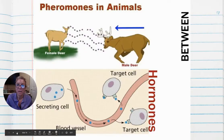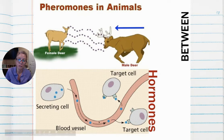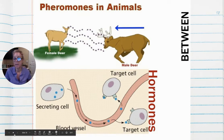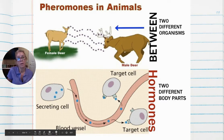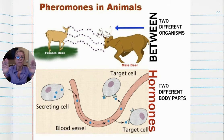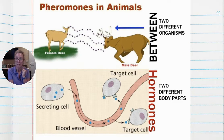Let's compare pheromones in animals with hormones. Hormones are secreted by a cell, travel through blood, and impact a target cell within the same organism. Here, a female deer secretes a pheromone affecting the male deer. Pheromones are chemical signals that act between individuals, whereas hormones are between two different body parts in a single organism. In your notes: pheromones are chemical signals that act between individuals.